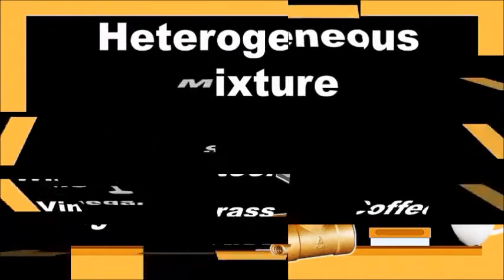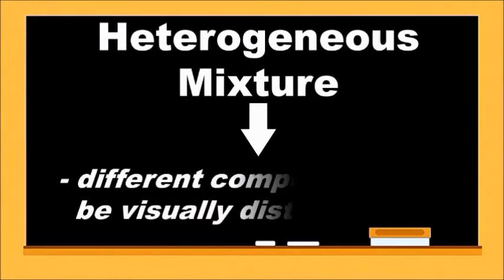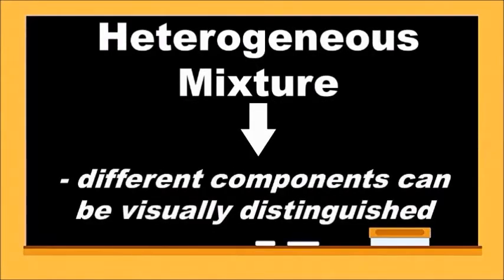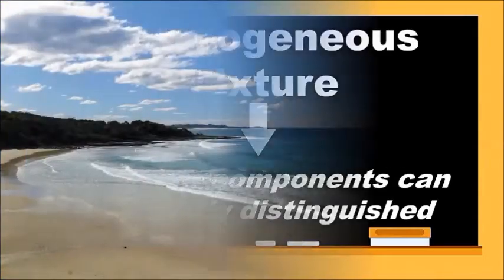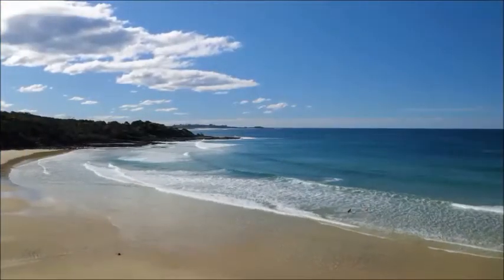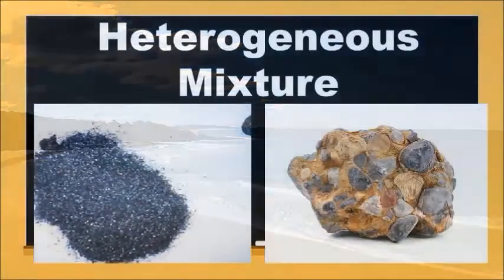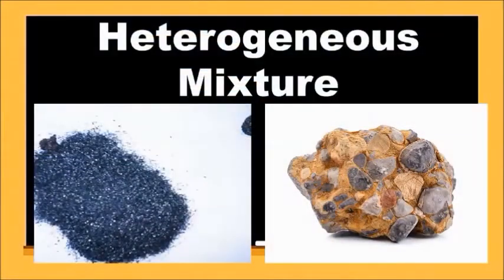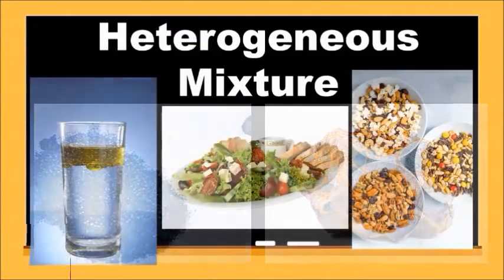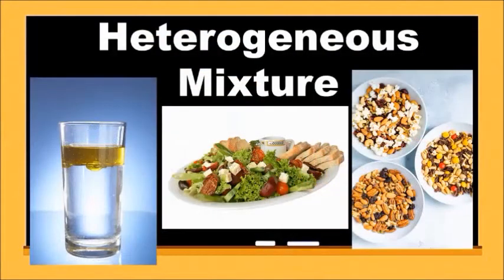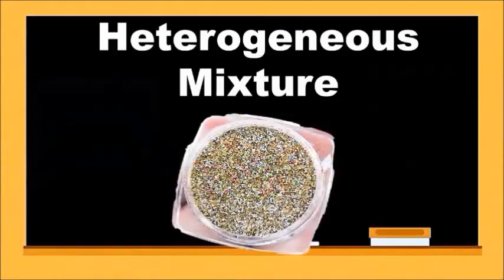A heterogeneous mixture is a mixture of two or more substances where different components can be visually distinguished — that is, its composition is not uniform. Examples of this type of mixture are mixtures of sand and water, sand and iron filings, a conglomerate rock, water and oil, a salad, trail mix, and mixtures of gold powder and silver powder.